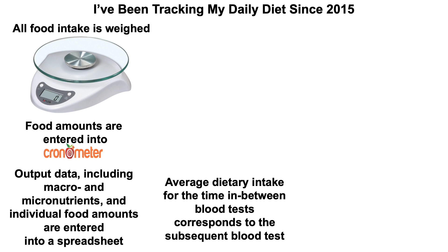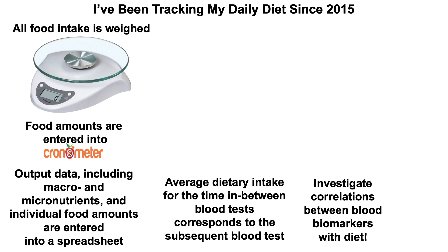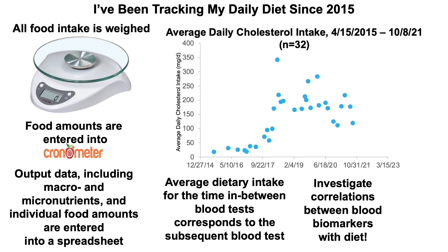The average dietary intake for the period between blood tests corresponds to the next blood test. So if I blood test on day one and day 60, the 59-day average dietary intake corresponds to the blood test on day 60. With enough blood tests and corresponding dietary data, I can look for correlations between my diet and blood test variables to see what's optimal. I've done 32 blood tests since April 2015 through October 8th — a six-and-a-half-year period — and each blue dot corresponds to my average daily dietary cholesterol intake that corresponds to a blood test.